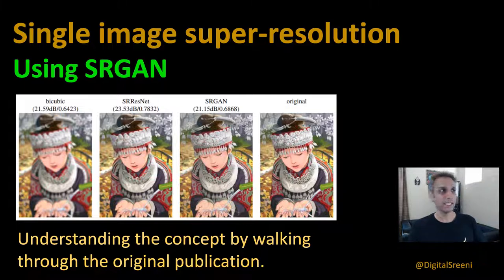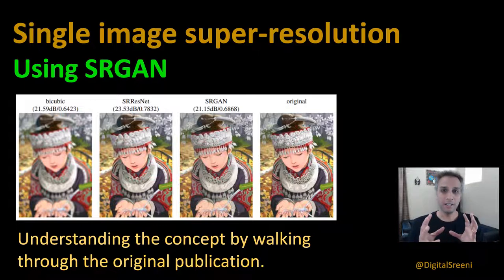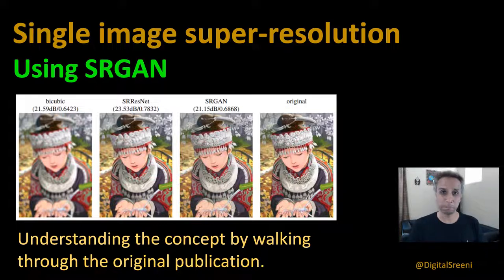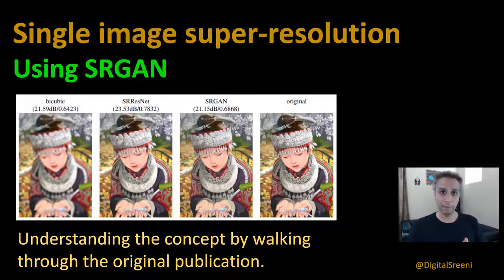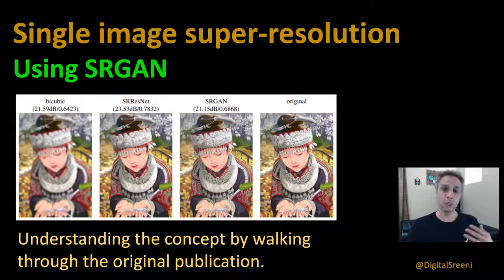let's get into today's topic which is single image super resolution using SRGAN. If you have noticed, the last few videos we have been looking at various forms of generative adversarial networks. We started off by understanding GAN, then progressively looked at conditional GANs, then pix-to-pix, and in the last couple of videos we looked at cycle GANs for unpaired image-to-image translation.